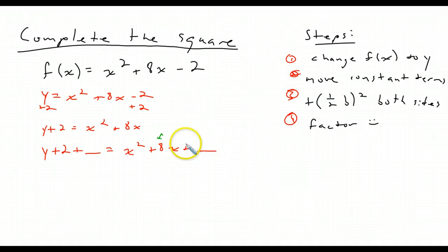1 half of 8 is 4. 4 squared is 16, so I add 16 to that side. There's nothing on the outside of any parentheses, so I add 16 to this side as well. And then it's just a matter of simplifying.